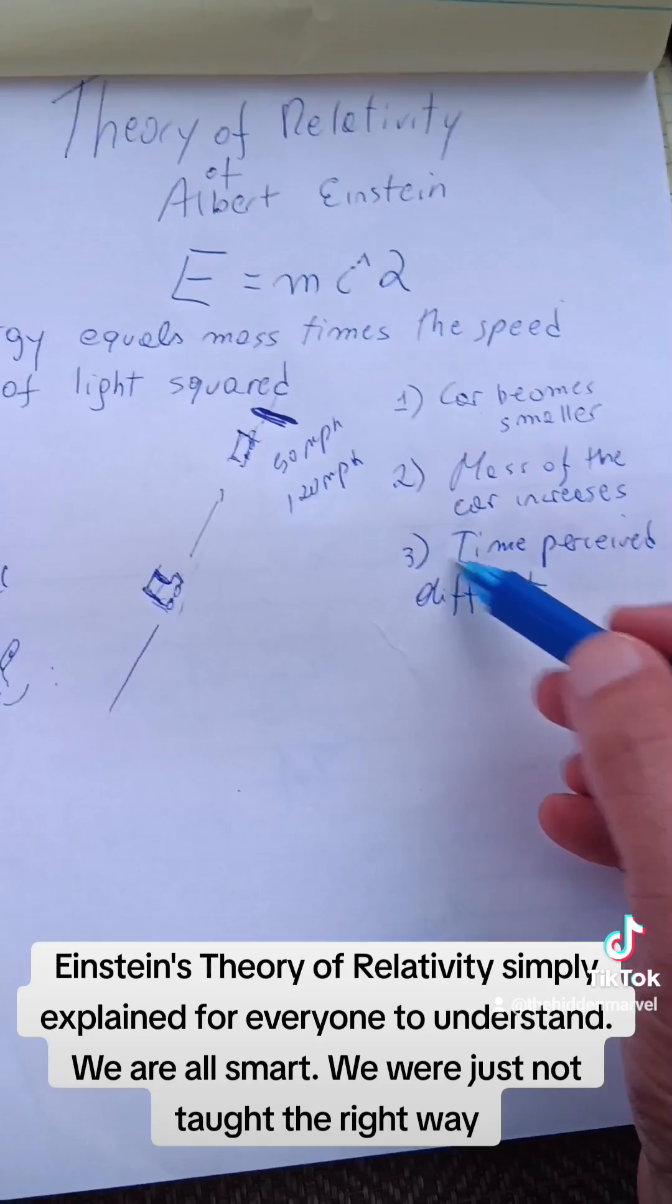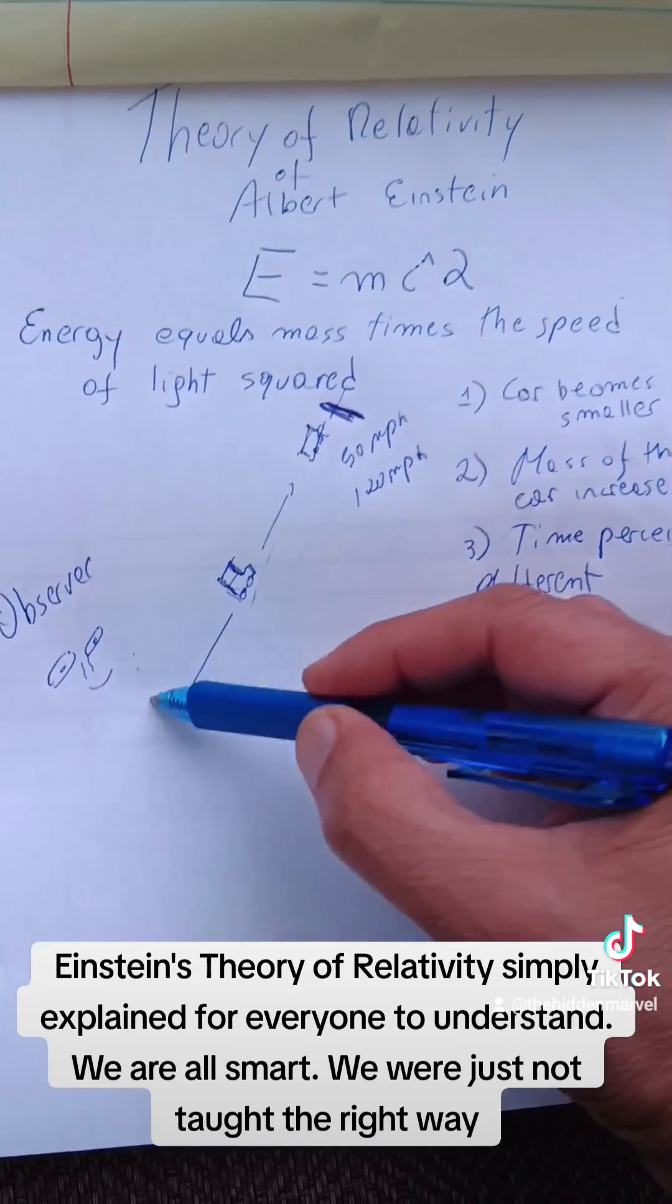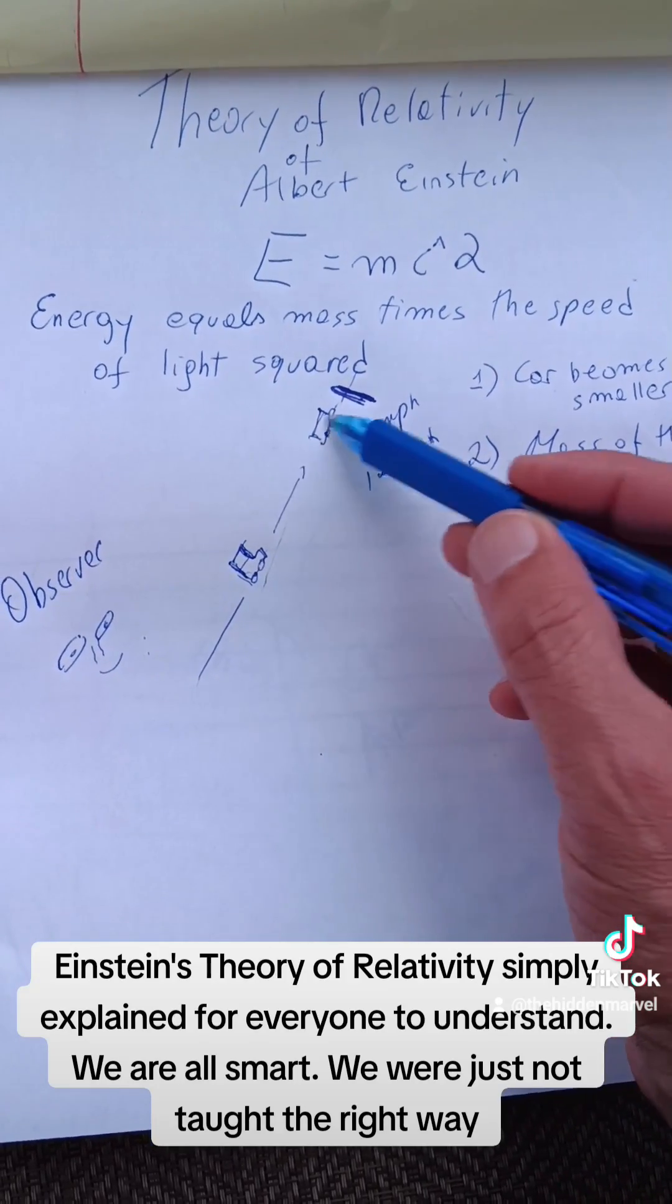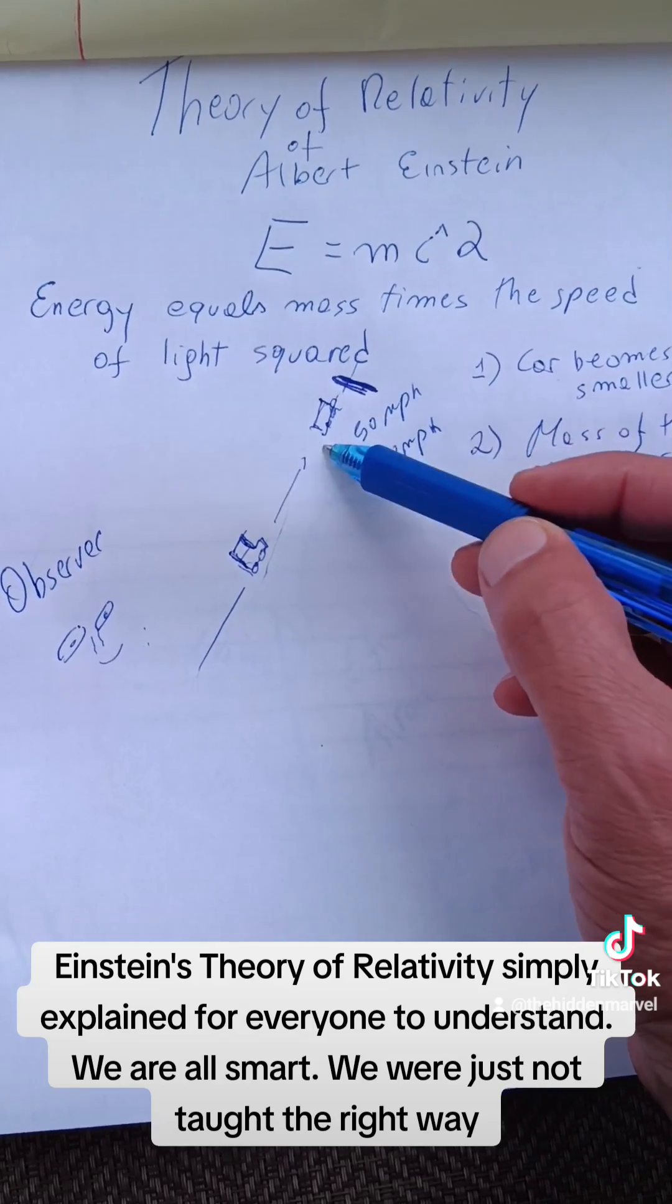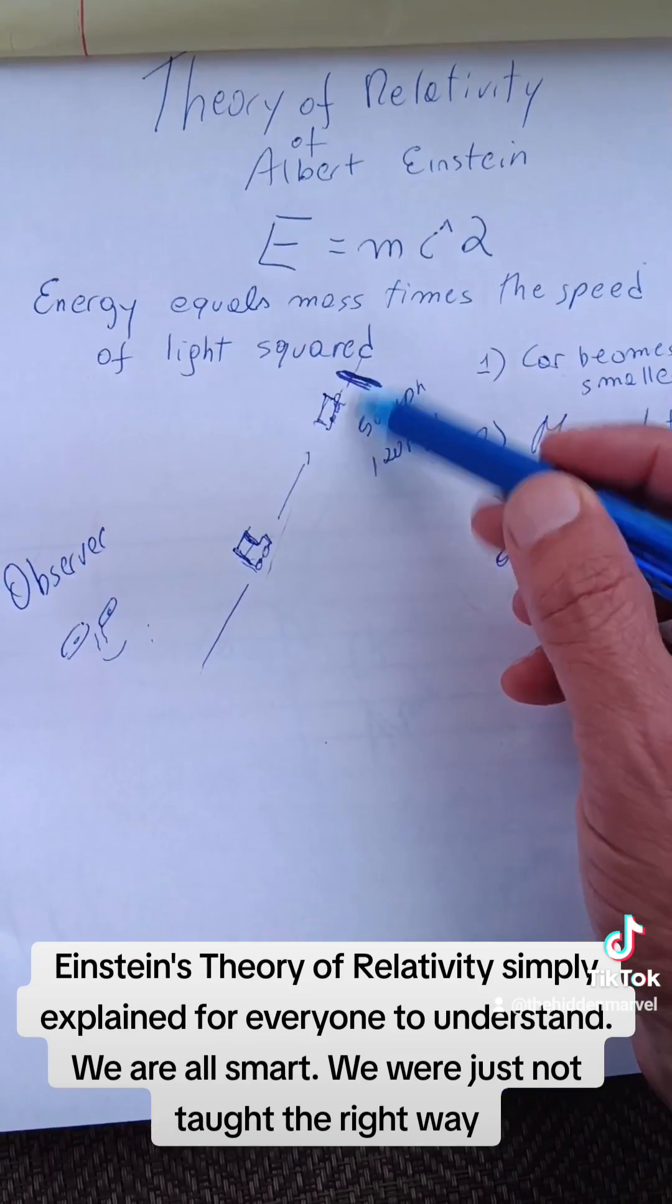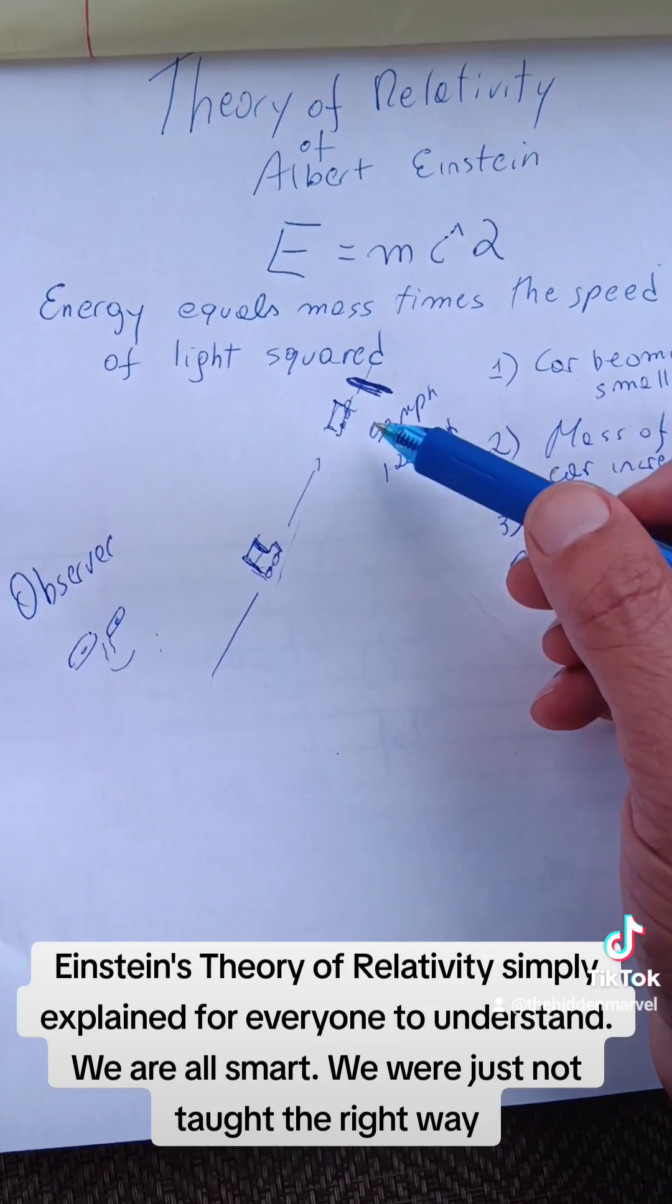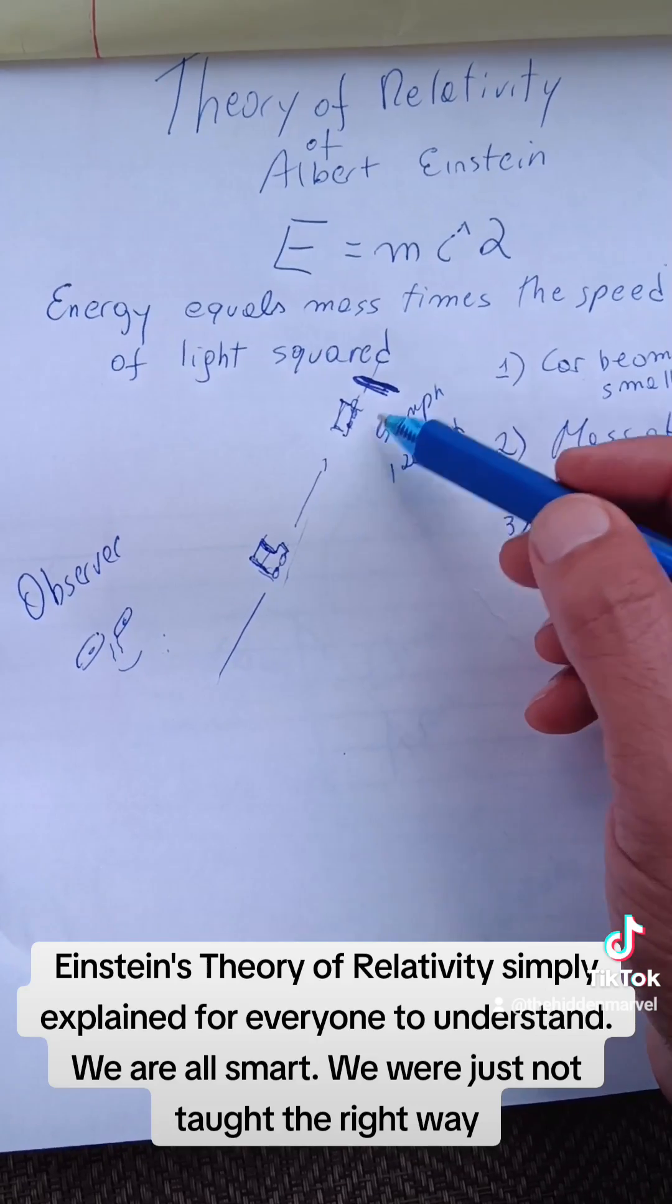The third one is the time perceived differently from the observer, as we're observing, and the driver. So the time actually goes slower. It's perceived slower from the driver as he accelerates in motion as the car drives faster and faster. This is more valid when it comes to the speed of light.